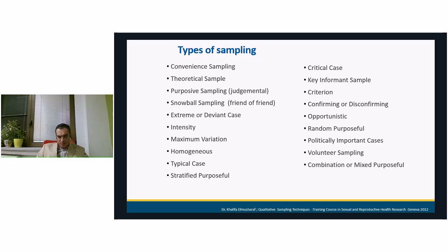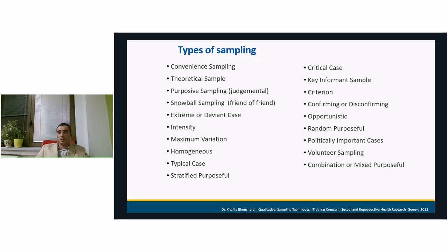There are many types of sampling in qualitative research — around 20 known types. These include: convenience sampling, theoretical sample, different from theory sample, purposive sampling, judgmental, snowball sample, friend of a friend, extreme or deviant case, intensity sample, maximum variation sample, homogeneous, typical case, stratified purposeful, critical case sample, key informant sample, criterion sample, confirming or disconfirming sample, opportunistic, random purposeful, politically important cases, volunteer sampling, and combinations.